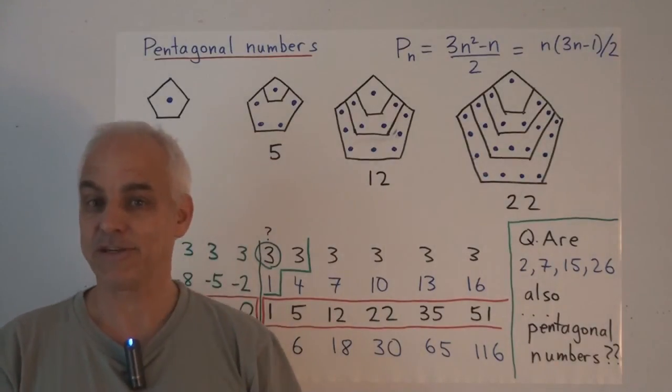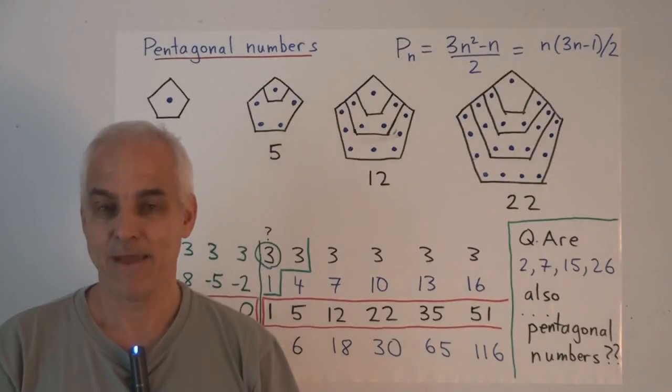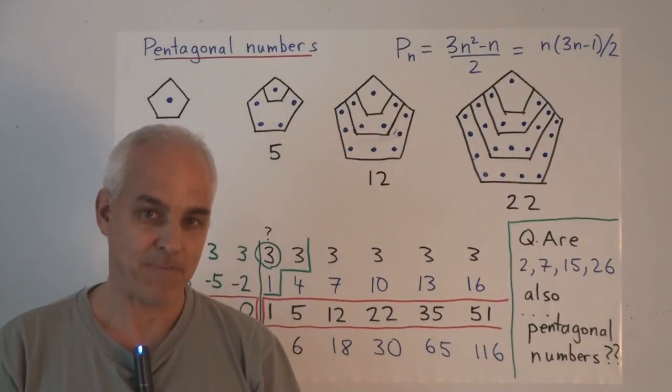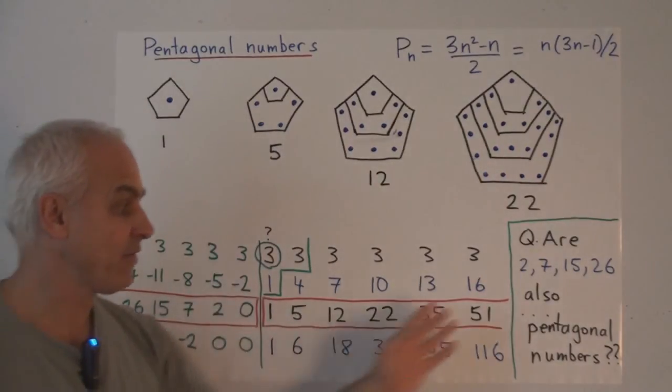He discovered that pentagonal numbers are not just geometrical curiosities, but are intimately connected with some other things, in particular with number theory. And I'm going to tell you about that next time. So we're going to talk about Leonard Euler and how he essentially resolved this question.